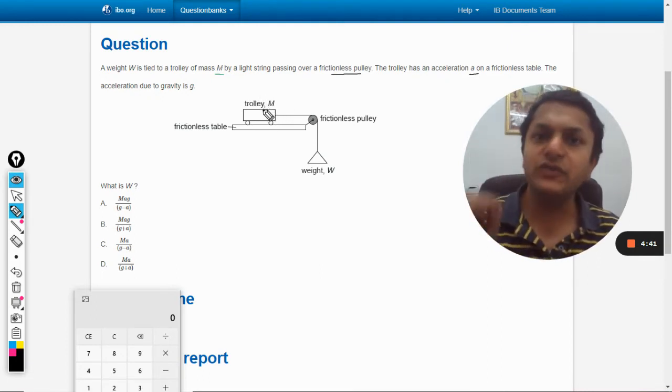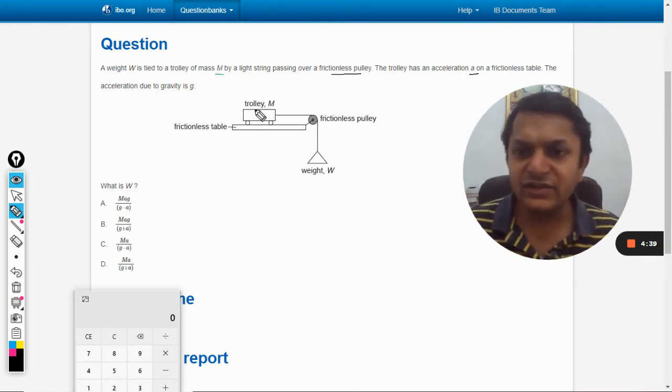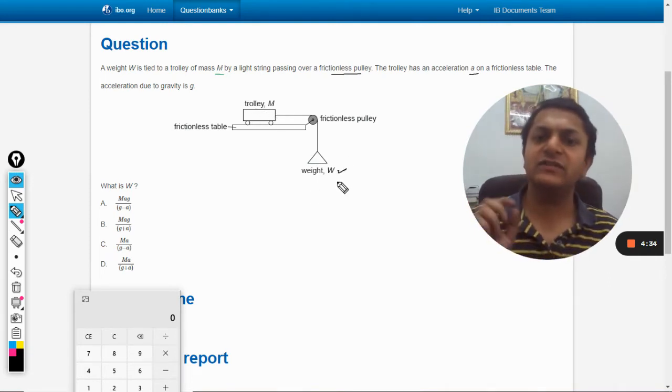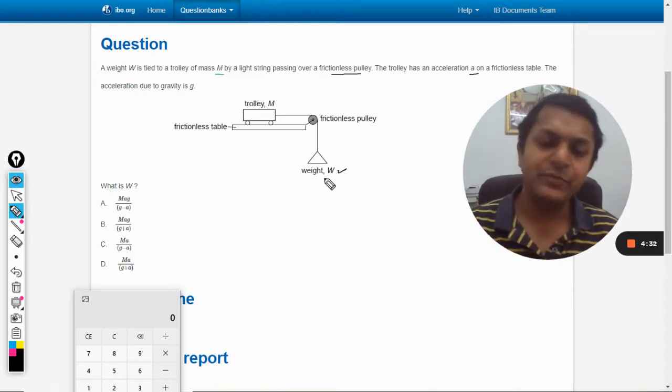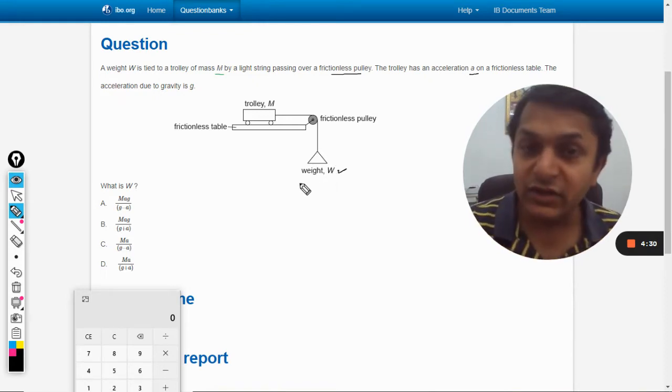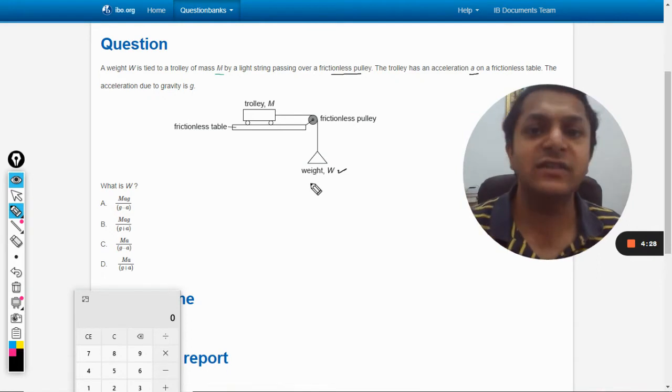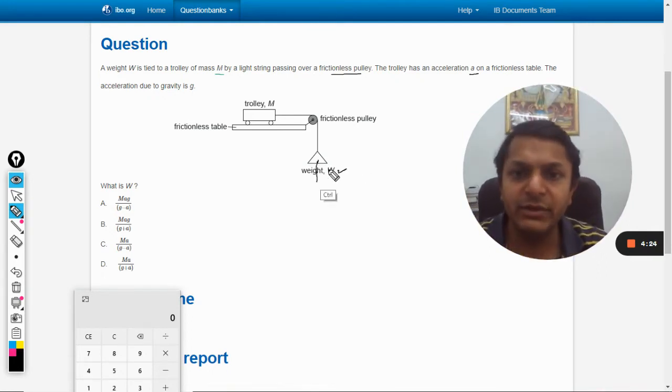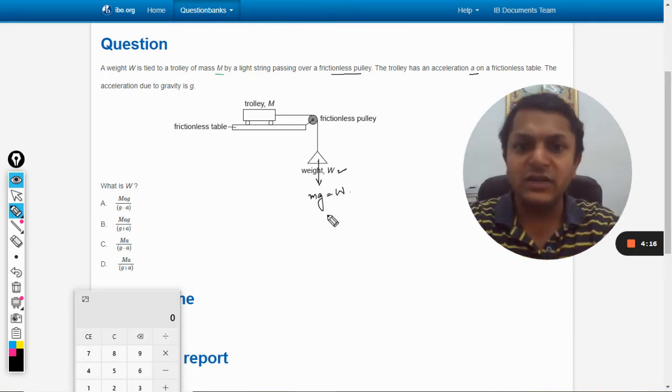The weight of this body is given as W, but the mass is not given. Caution: the weight is given, not the mass. So the downward force that is acting here will be the weight. You can call it mg or you can just write it W because W is what is given to us.